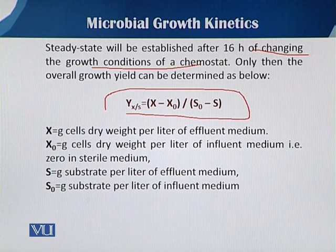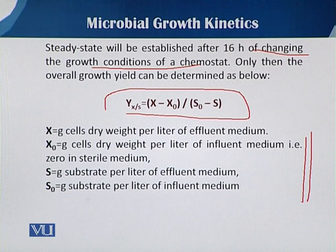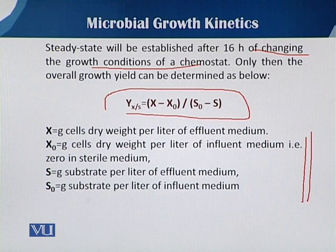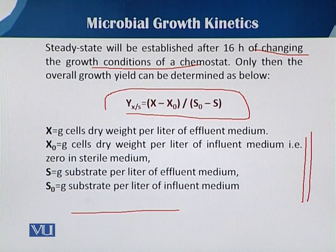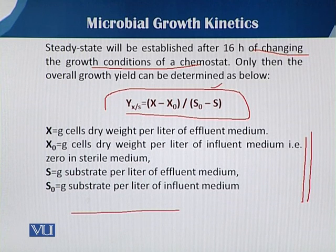The overall growth yield equation we have already discussed states that the yield coefficient equals (x minus x-naught) over (s-naught minus s), where x is biomass concentration, x-naught is initial biomass, s-naught is initial substrate concentration, and s is the residual substrate concentration.